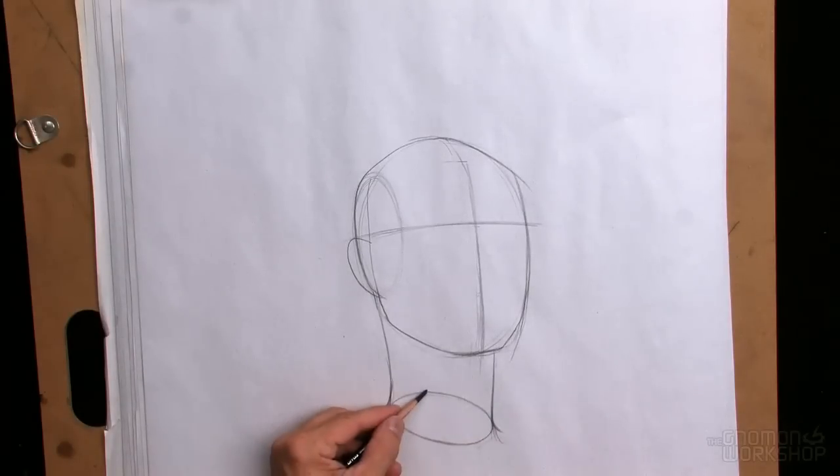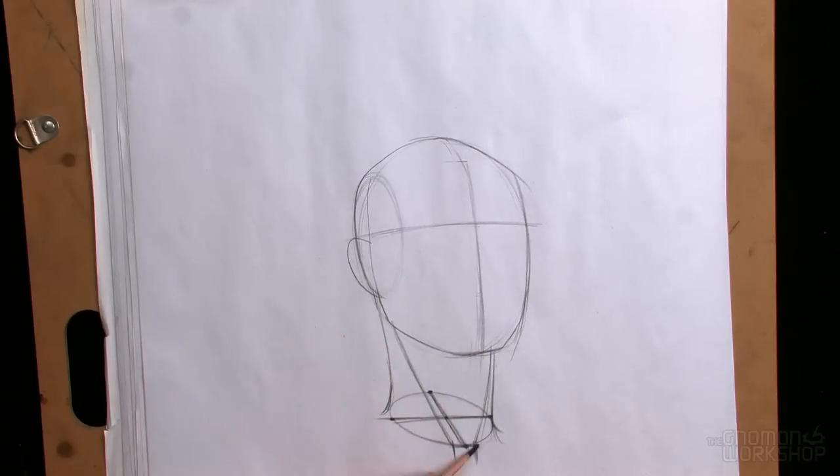Once the oval has been morphed, the center line is drawn in, and then a pitch line, or the line that runs across the brow, define the angle of the head.